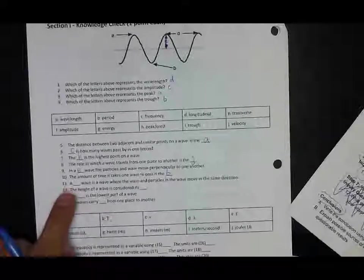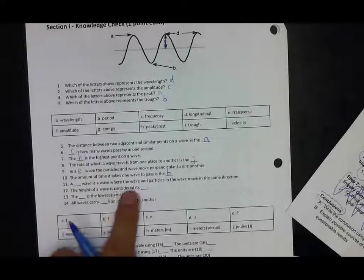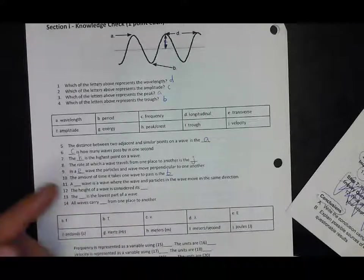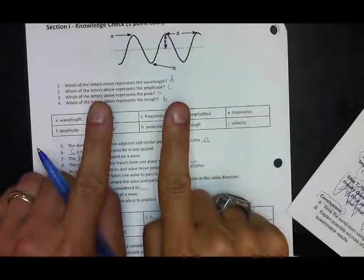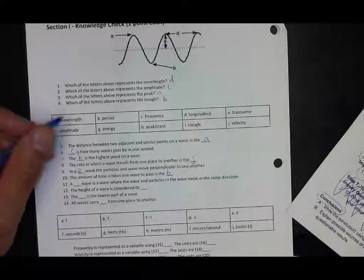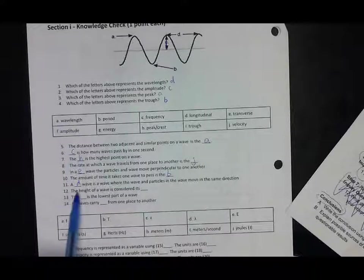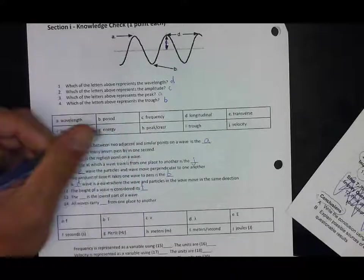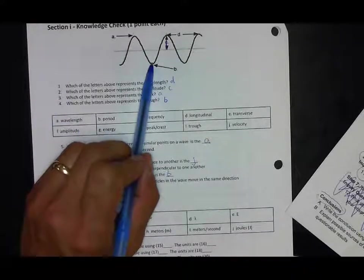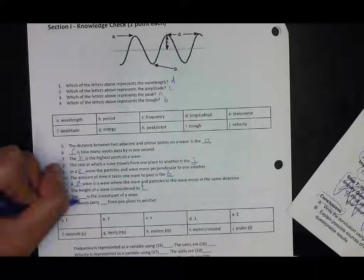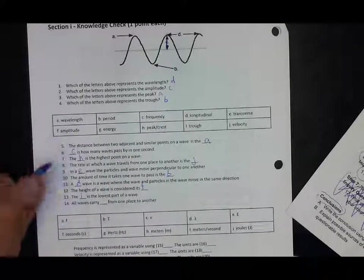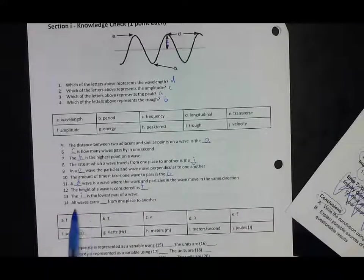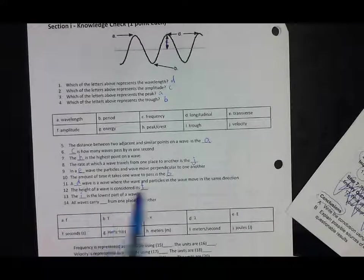A blank wave is a wave where the wave and particles in the wave move in the same direction. If they're both moving in the same direction, they're parallel, and that's going to be a longitudinal wave. The height of the wave is considered the amplitude, and the lowest part of the wave, the bottom part, is the trough. All waves carry energy from one place to another.